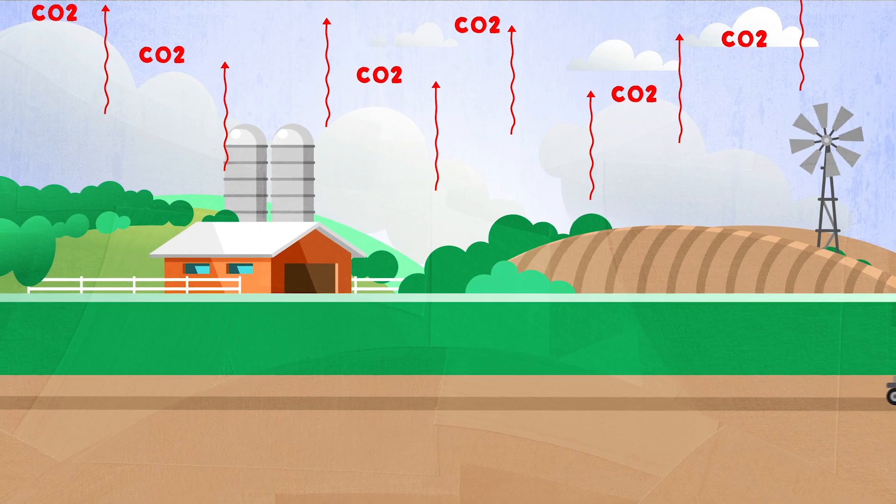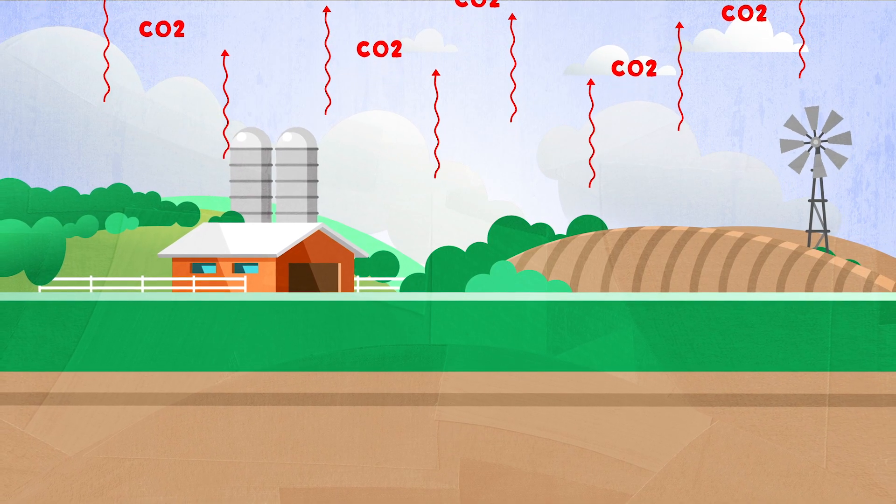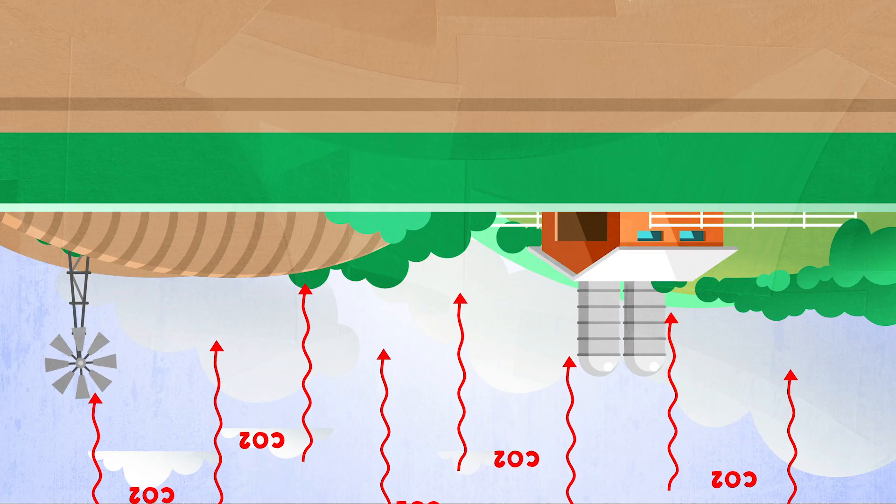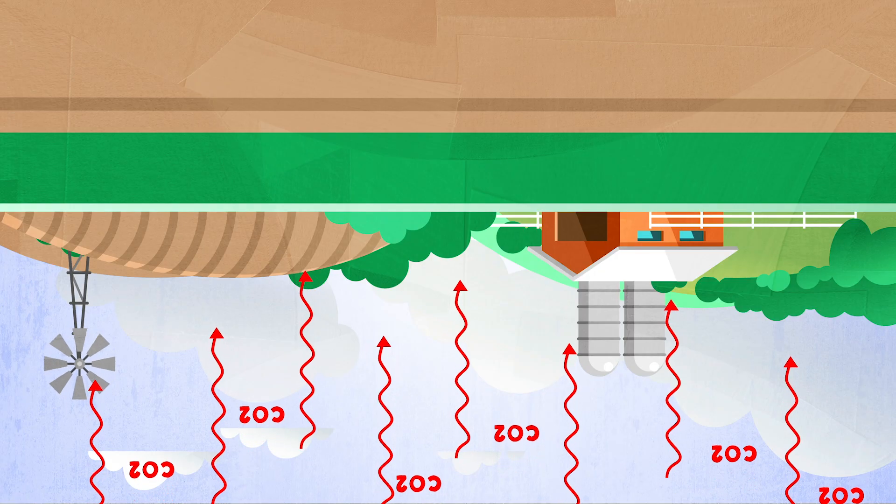The good news? We now know agriculture can help flip this around and help make extreme climate change history. The solution lies in the soil.